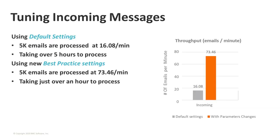For incoming messages, we queued up about 5,000 incoming emails and monitored how fast they came in. Those 5,000 emails took about 5 hours to process at 16.08 messages per minute using default settings. With the best practice settings, those same 5,000 emails were processed at a rate of 73.46 per minute, taking just over an hour — again, a quite substantial performance improvement.